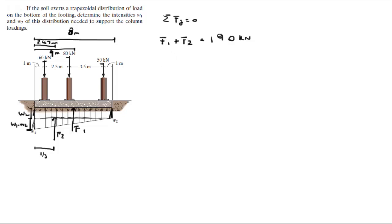Now you know that F1 is the area of the rectangle which would be W2 times the length of the rectangle, which would be 8 times W2. And F2 is the area of the triangle, which is 8 times W1 minus W2, all over 2 because it's a triangle, is equal to 190.